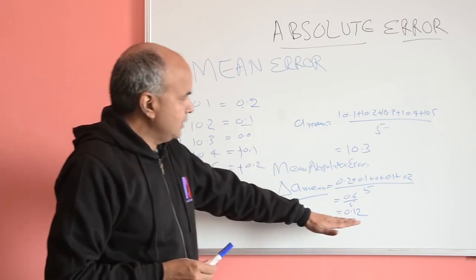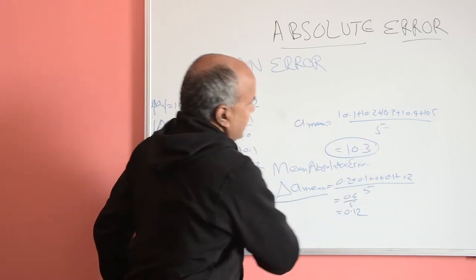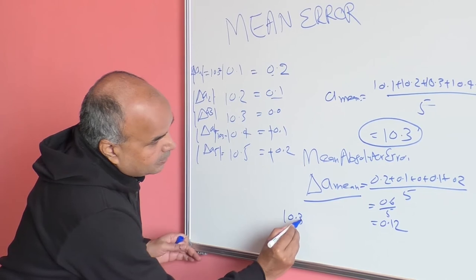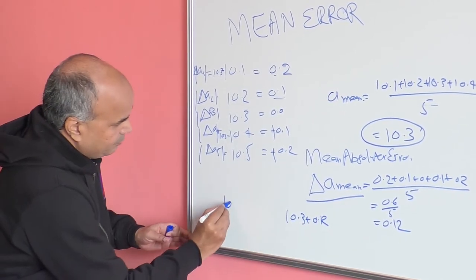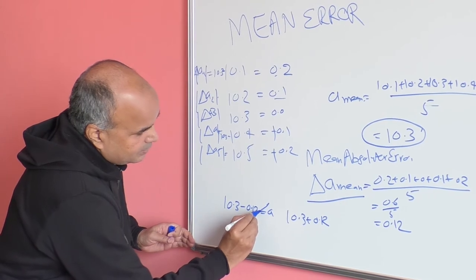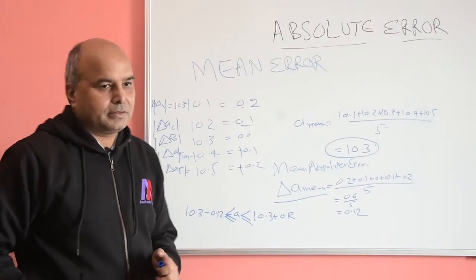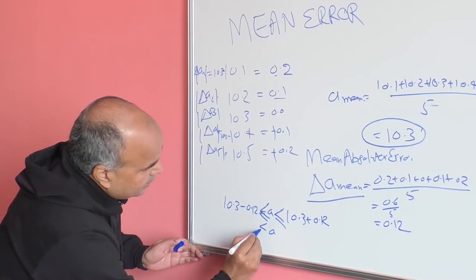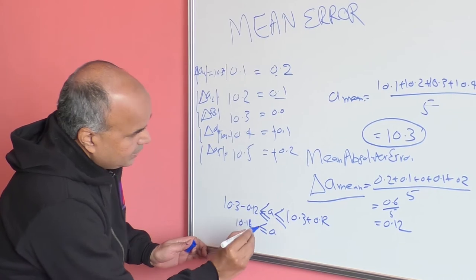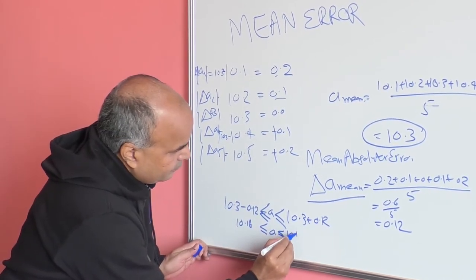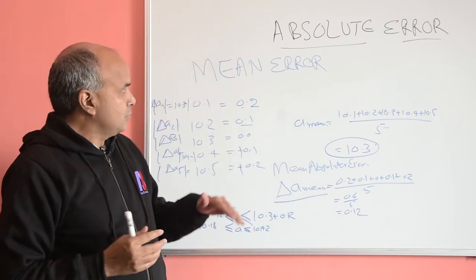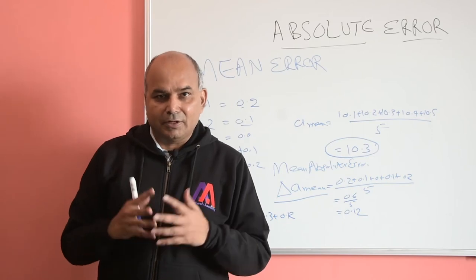Since the mean measurement is 10.3 and the mean absolute error is 0.12, the maximum value is 10.3 + 0.12 = 10.42 and the minimum is 10.3 − 0.12 = 10.18. So the actual value lies between 10.18 and 10.42, very close to 10.3.